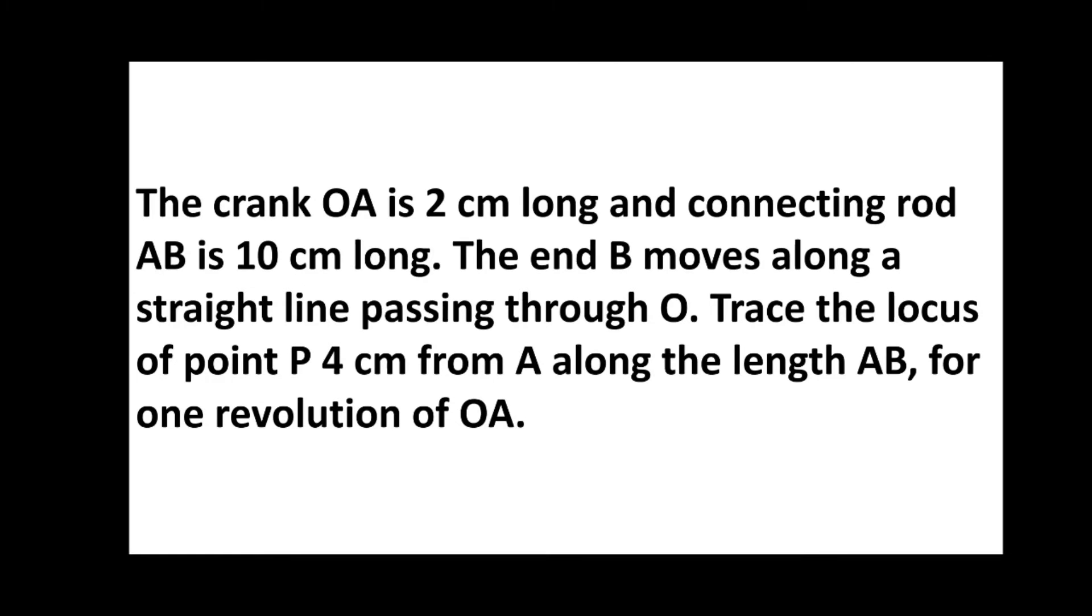The crank OA is 2 cm long and connecting rod AB is 10 cm long. The end B moves along a straight line passing through O. Trace the locus of point P, 4 cm from A along the length of AB for one revolution of OA.